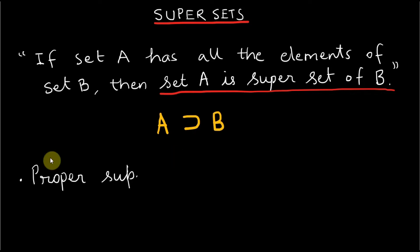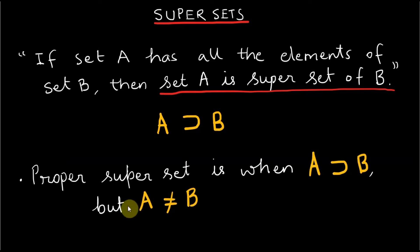Proper superset is when A is superset of B but A is not equal to B. There are some elements that are only available in set A.